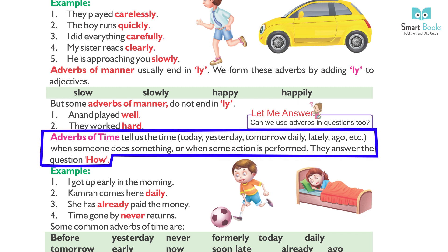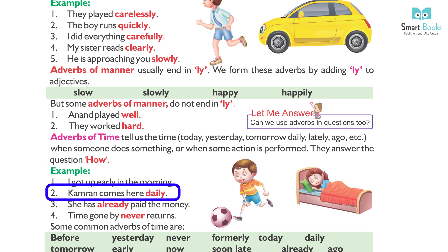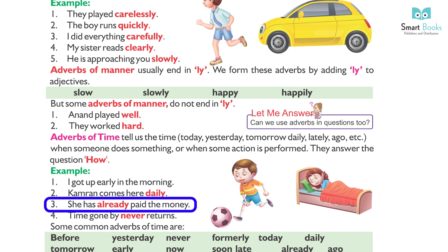Adverbs of time tell us when things happen. Common examples include: today, yesterday, tomorrow, daily, lately, ago, etc. They answer the question 'when.' Examples: 1. I got up early in the morning. 2. Kamran comes here daily. 3. She has already paid the money.